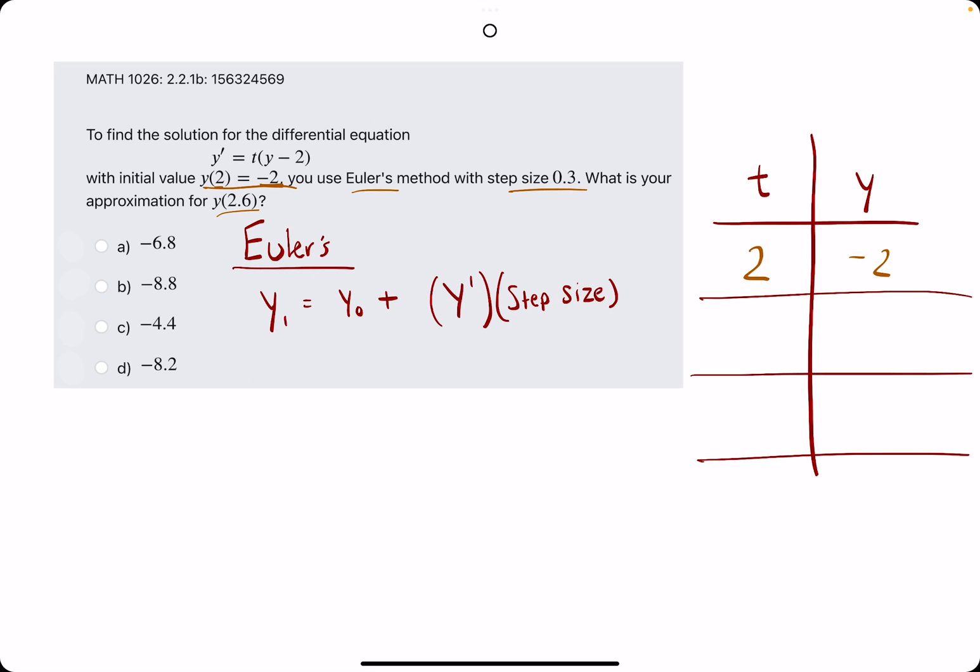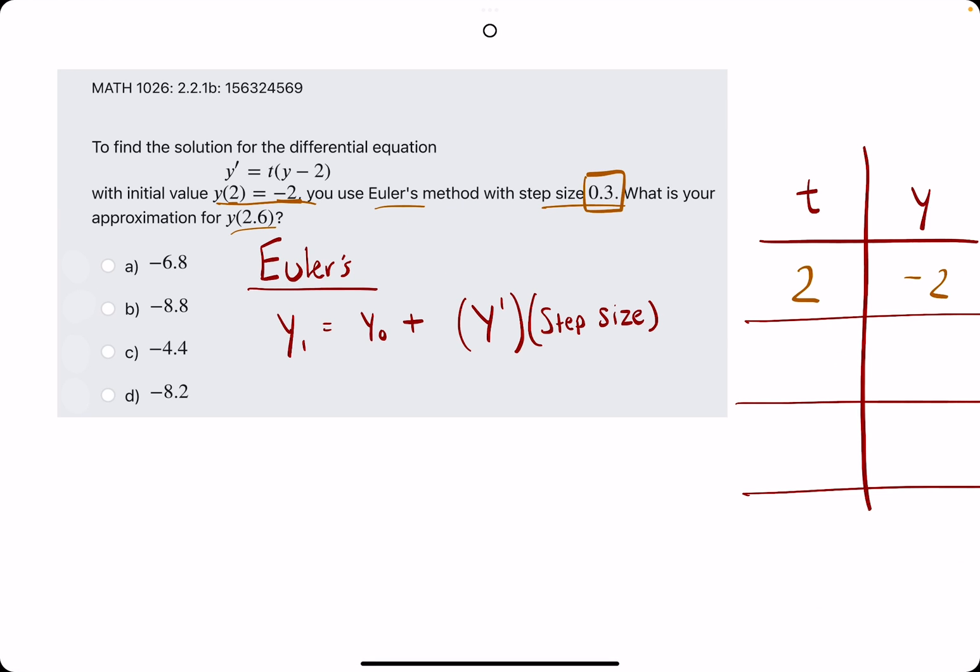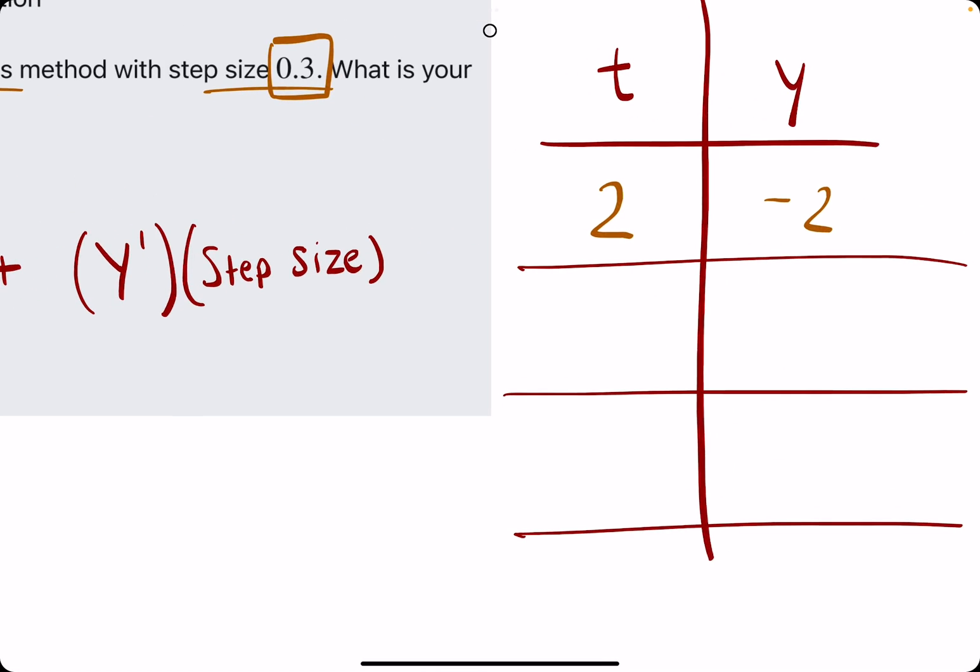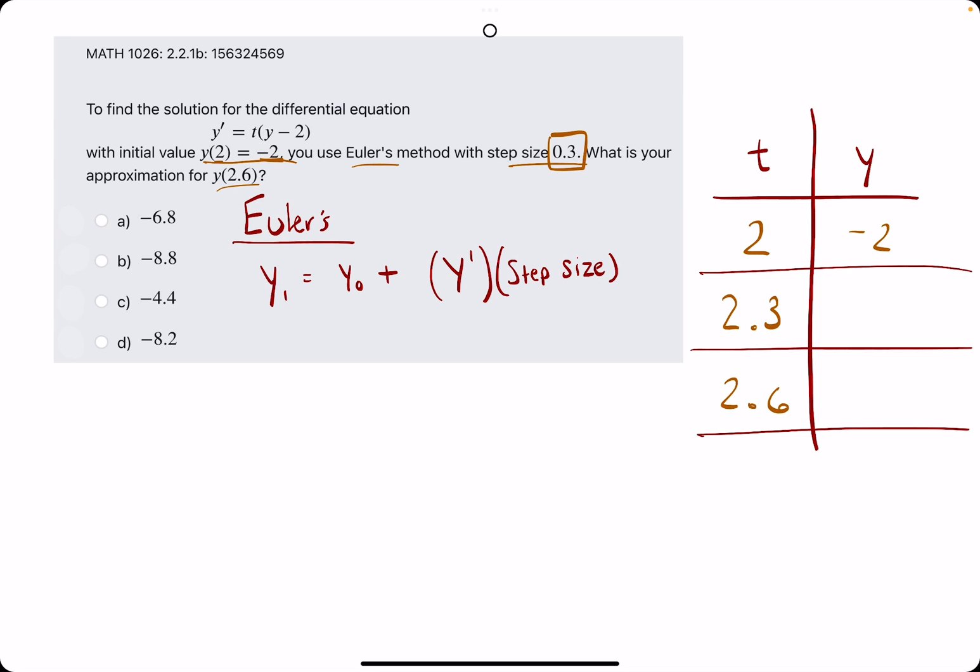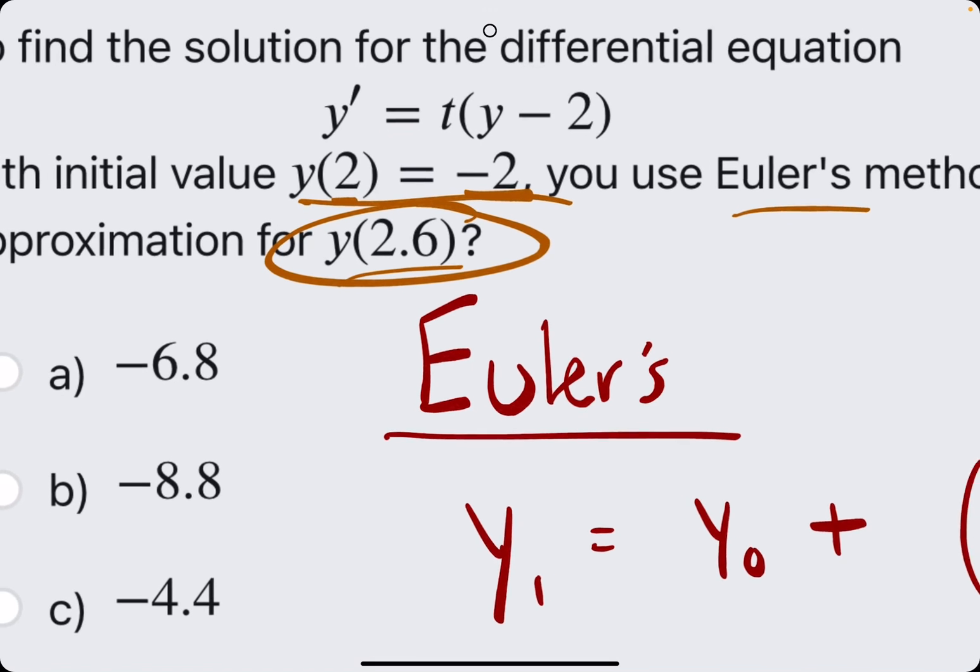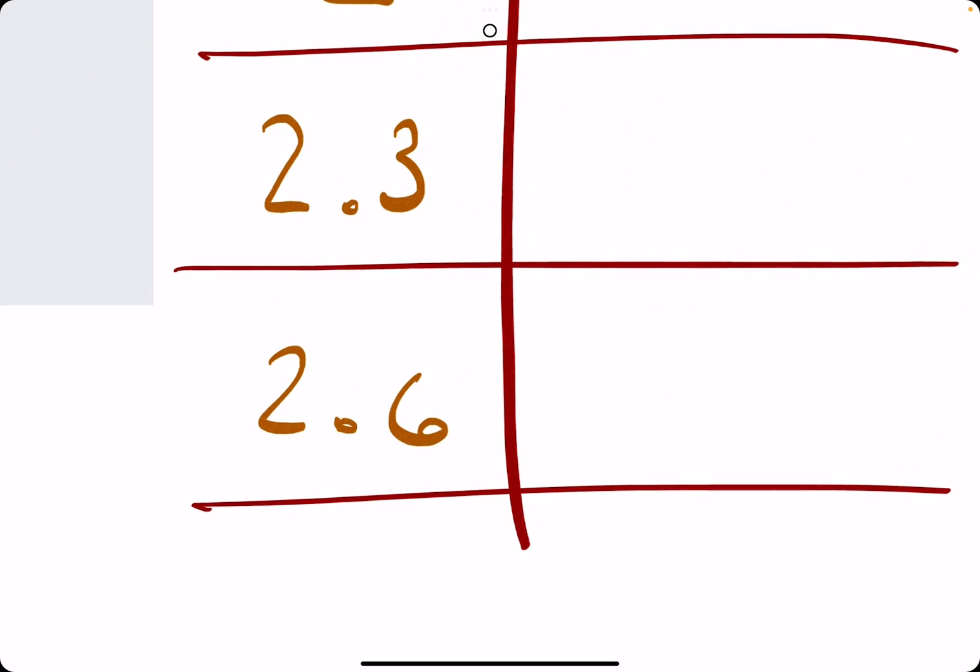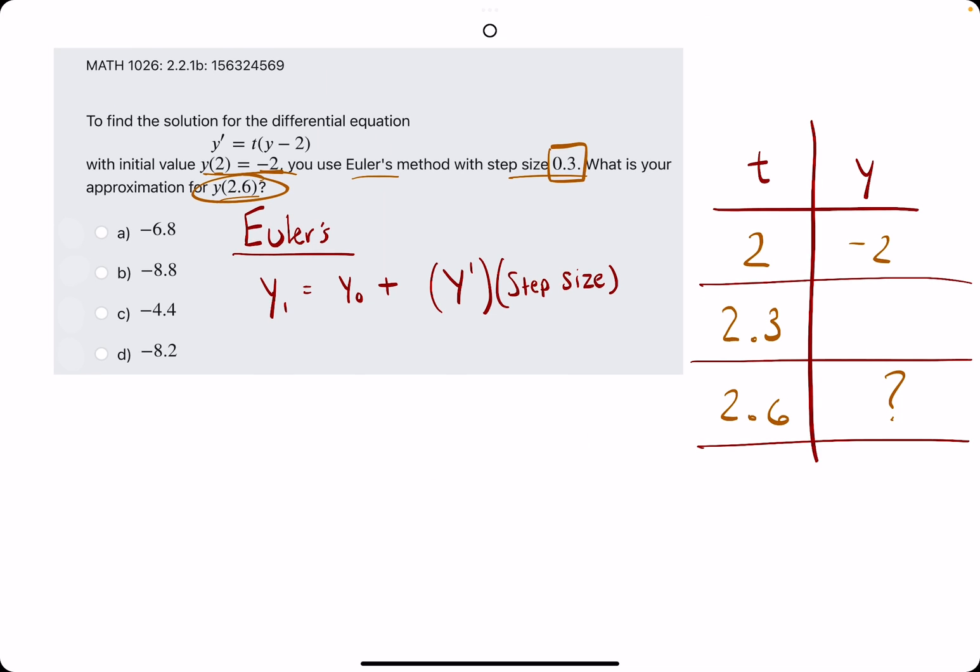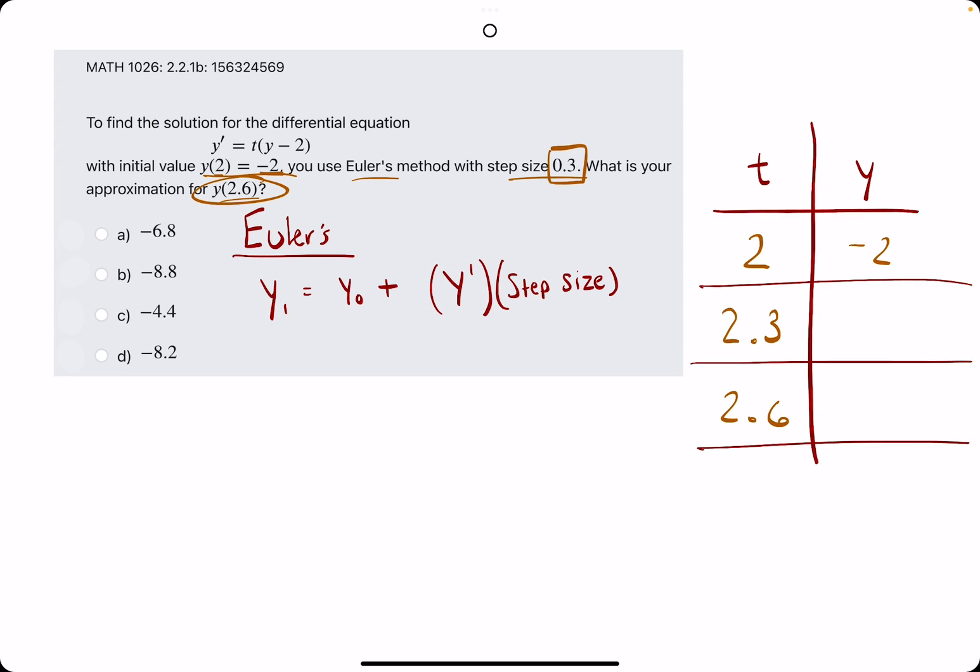Then what they tell us is that we have a step size of 0.3. That's telling us how much the t values will increase by each time. So a step size of 0.3 would take us to 2.3, and then one more time to 2.6, adding 0.3 each time. And so what they're asking us is, can we use Euler's method to approximate the y value at 2.6, when t is 2.6?